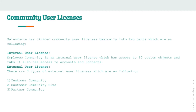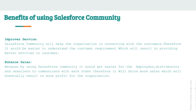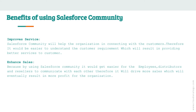The third external user license is Partner Community, which is best suited for B2B communities. Partner Community users can read, create, and edit standard sales objects such as accounts, contacts, and assets. Partner Community users also have access to send email and workflow approvals.